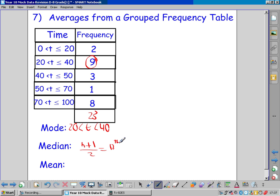That's not the median. That's the person, the time we're looking for. The 12th person, their time. Now which row would the 12th person be in?